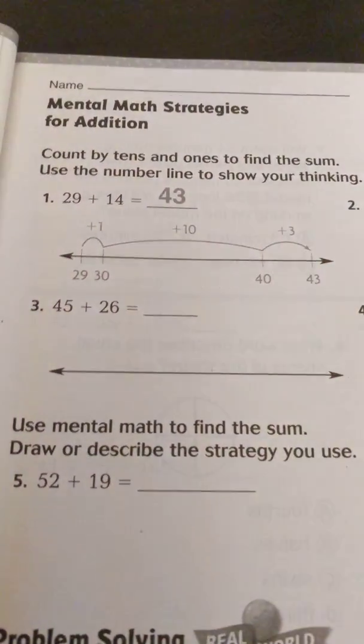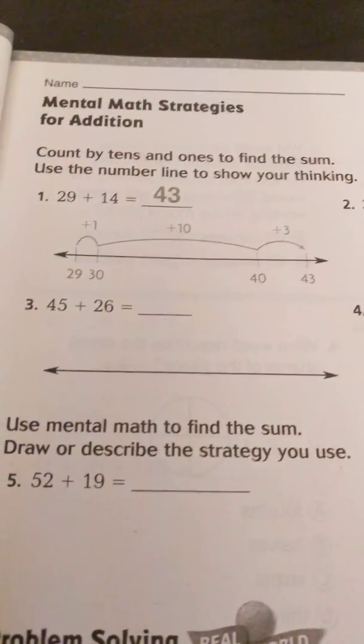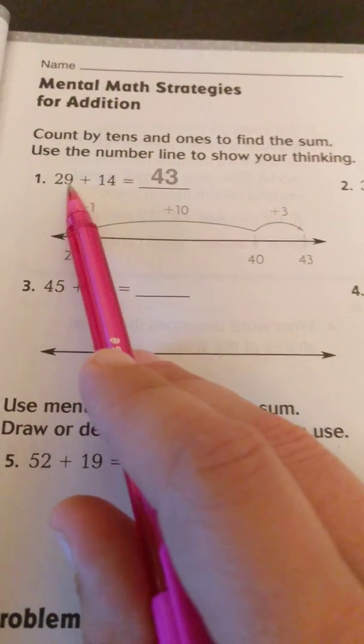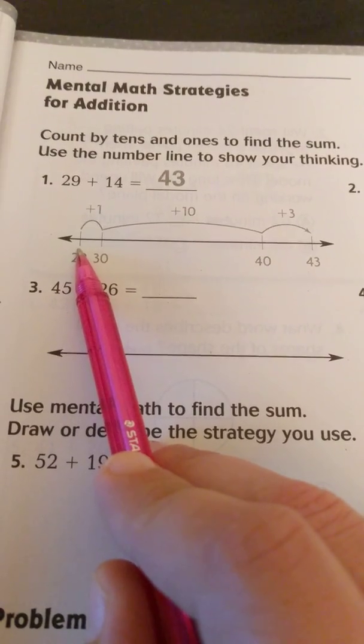So we have number 1 done for us already, and it says 29 plus 14. So what they did is they started with the first number here, 29.